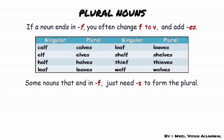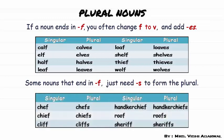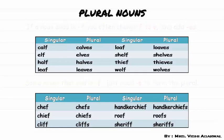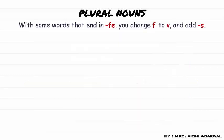Now some nouns that end in F need to add only S to form the plural. For example: chef becomes chefs, chief becomes chiefs, cliff becomes cliffs, handkerchief becomes handkerchiefs, roof becomes roofs, sheriff becomes sheriffs. Now for words ending with FE, we change F into V and then add S.